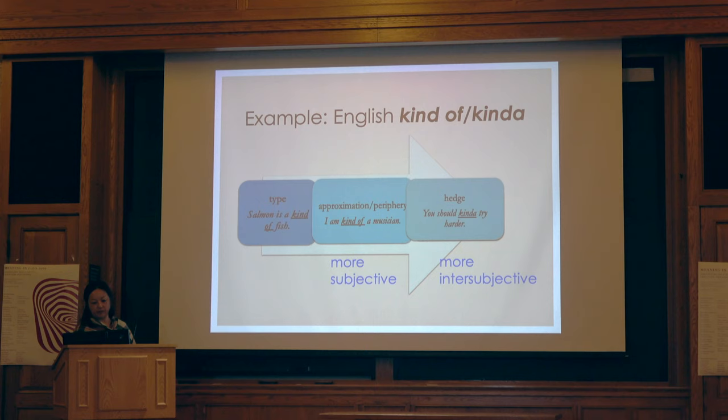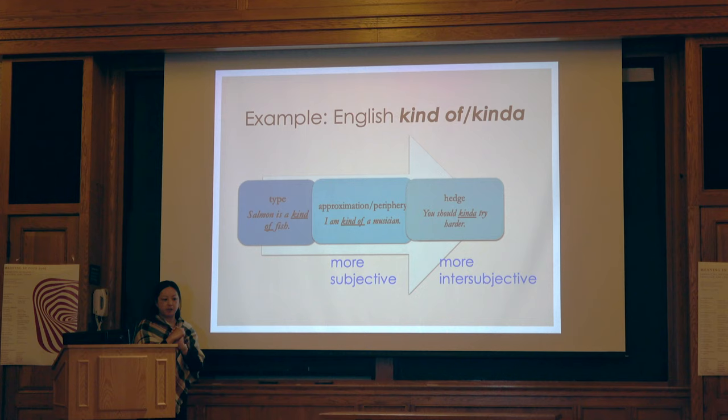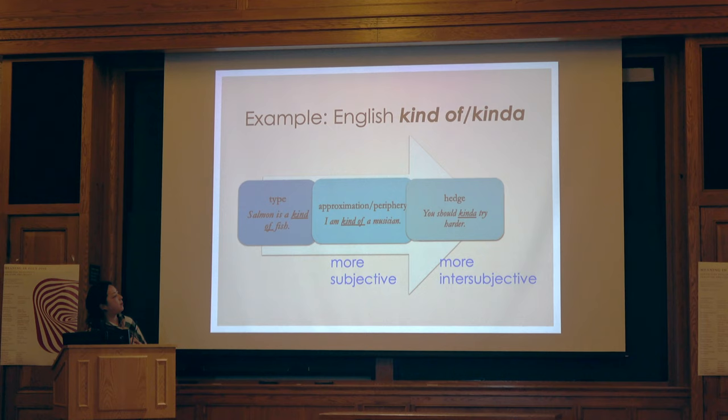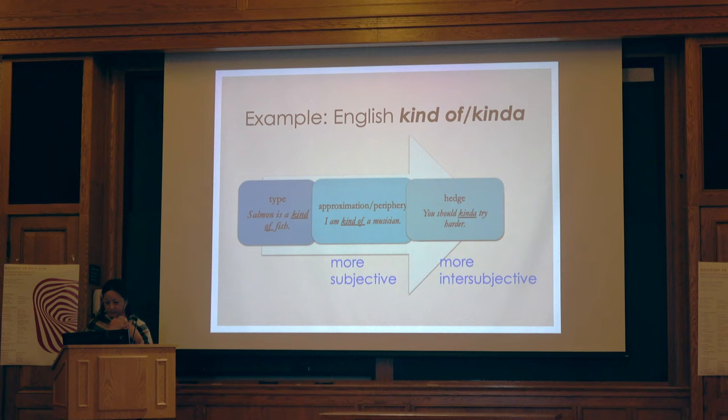Just to show an English analogy — 'kind of,' 'kinda' — it starts from a least subjective level, as in 'a sound is kind of fish,' which is a descriptive meaning of type. Then it becomes more subjective over time: 'I'm kind of a musician,' where 'kind of' refers to the subjective judgment of how musician-like you are. And then more intersubjective: 'you should kinda try harder' — it's really about your attitude toward the utterance itself.